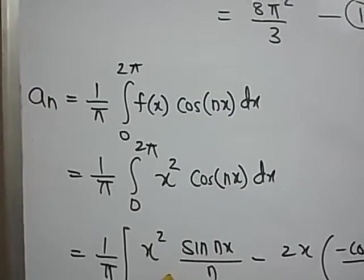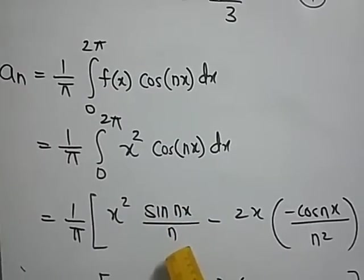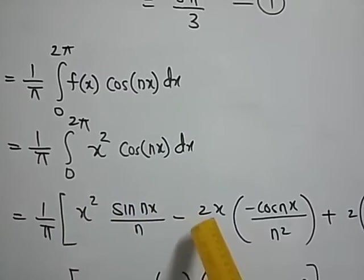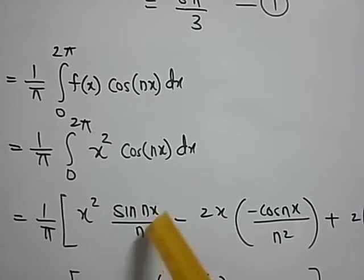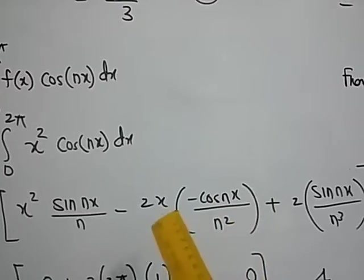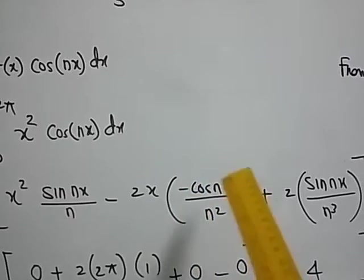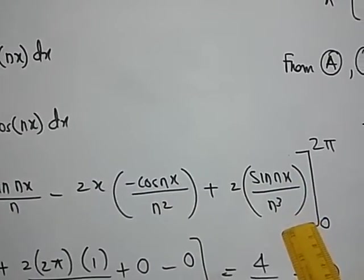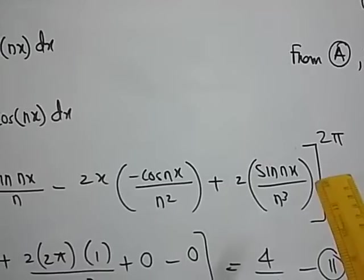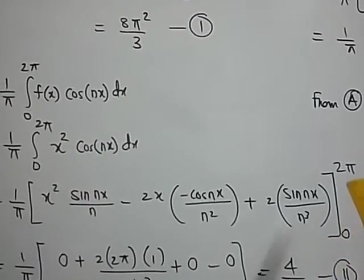So here this is your u and this is your v. So first we write down u as it is and we write integral of cos(nx) which is sin(nx) upon n. Then a minus sign. We write down derivative of x² which is 2x and integral of sin(nx) which is minus cos(nx) upon n². Plus 2 into integral which is sin(nx) upon n³. Next term the derivative of 2 is going to be 0 so therefore all the terms after this vanish. We put that in the box between the limits 0 to 2π.